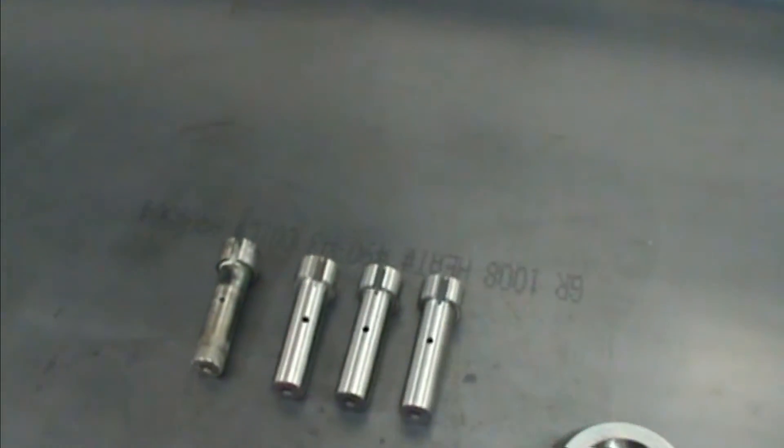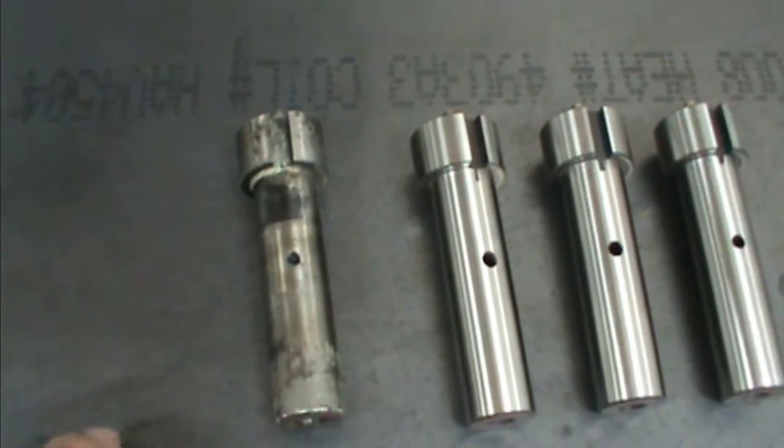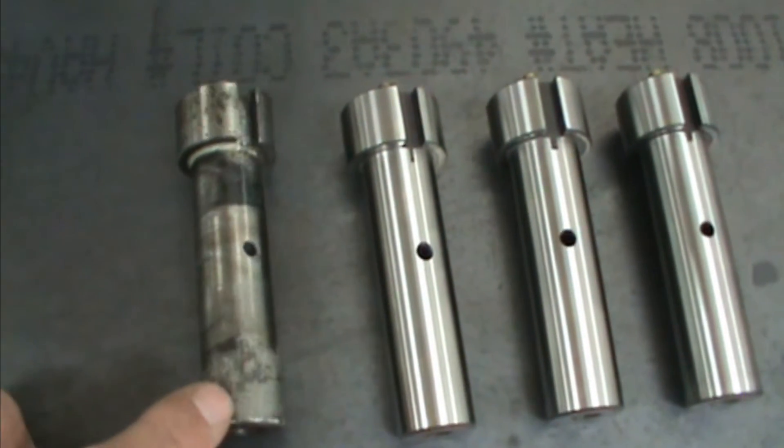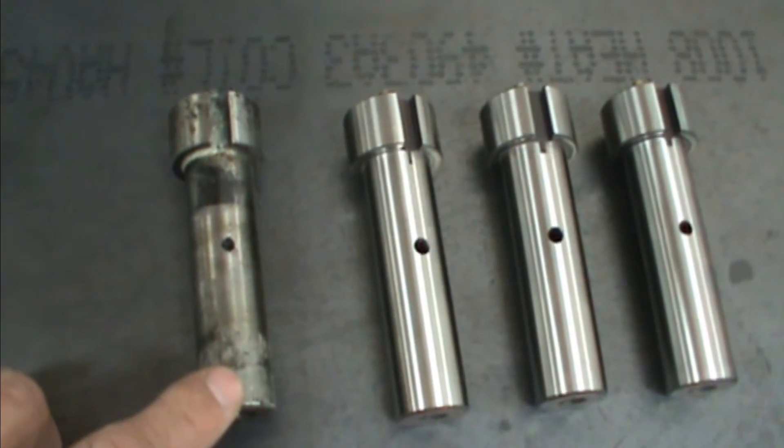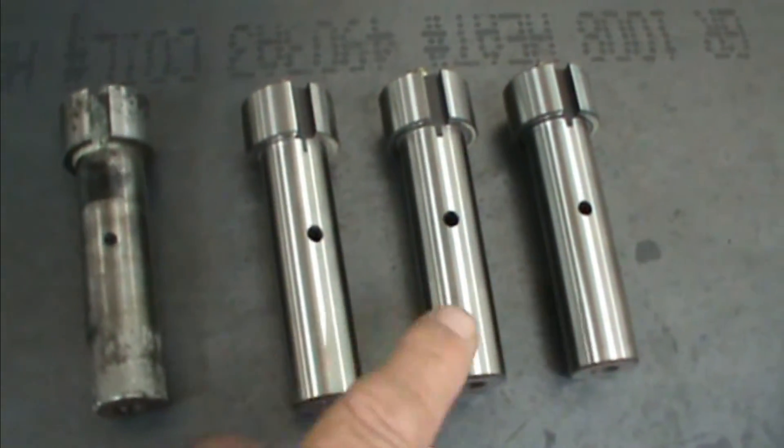The weld roll pins themselves, inspect them. You get some that are worn and ground on. These need to be replaced with new weld roll pins.